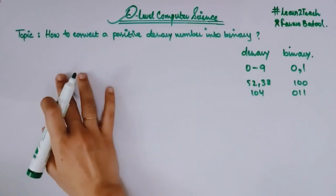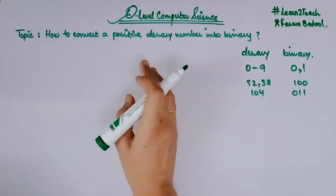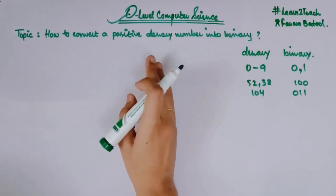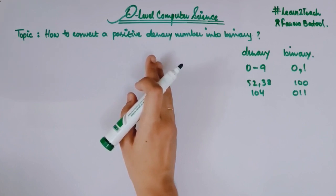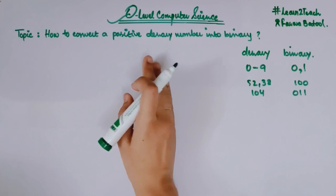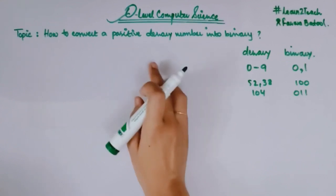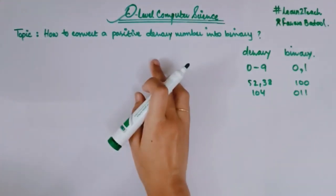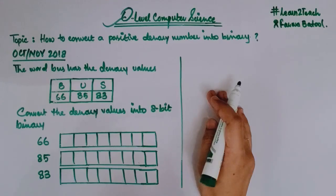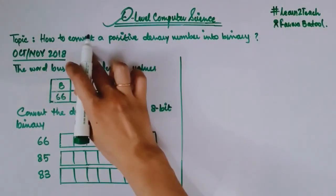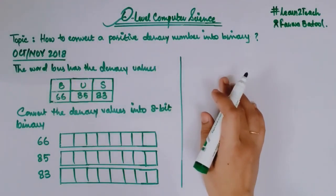Now, moving towards an example, I am going to give you a past paper example. Doing past paper examples is the best practice for a student to understand how questions can come in your exam. So, moving towards my first past paper question — this is from the October/November 2018 past paper.